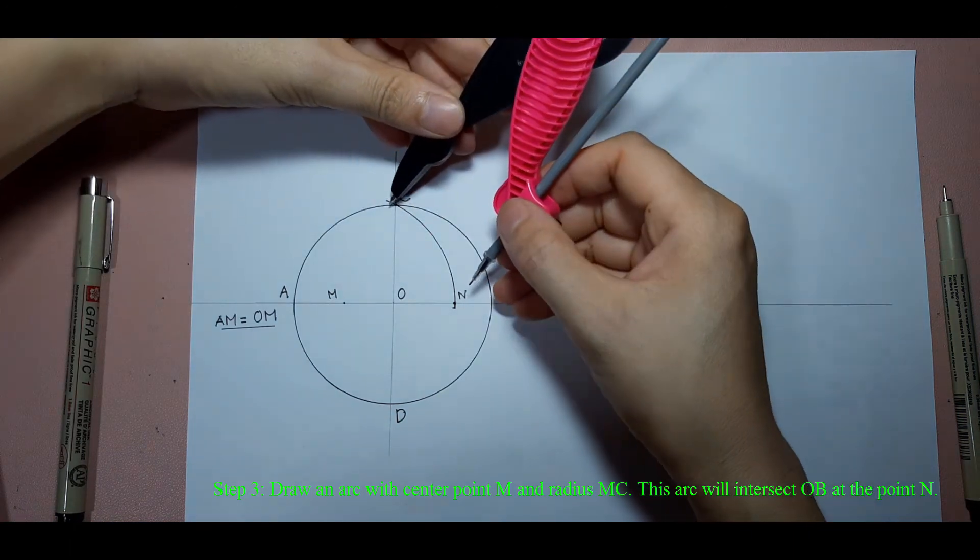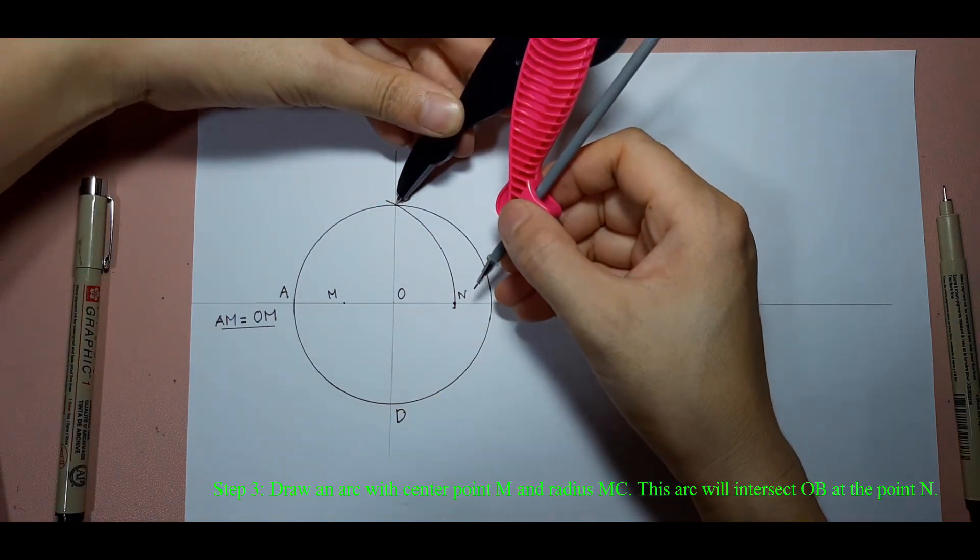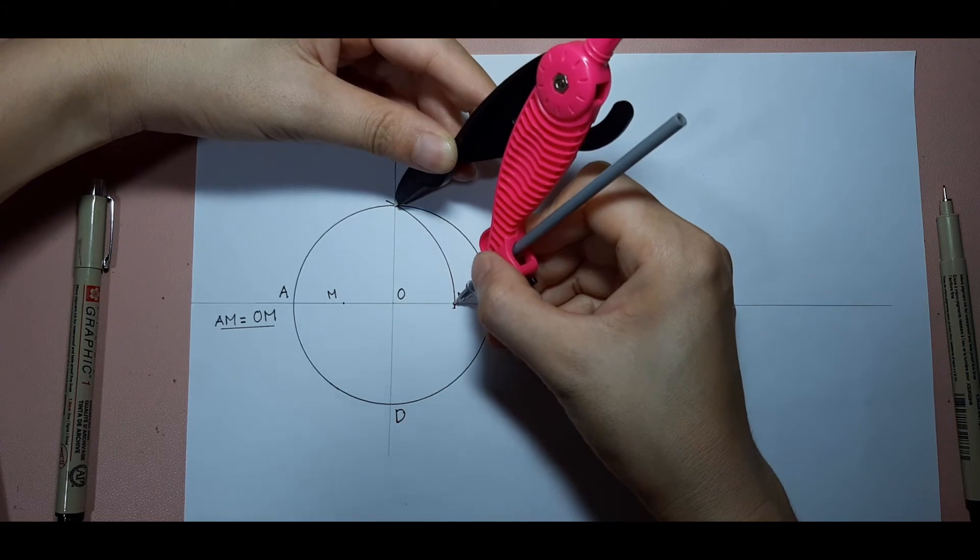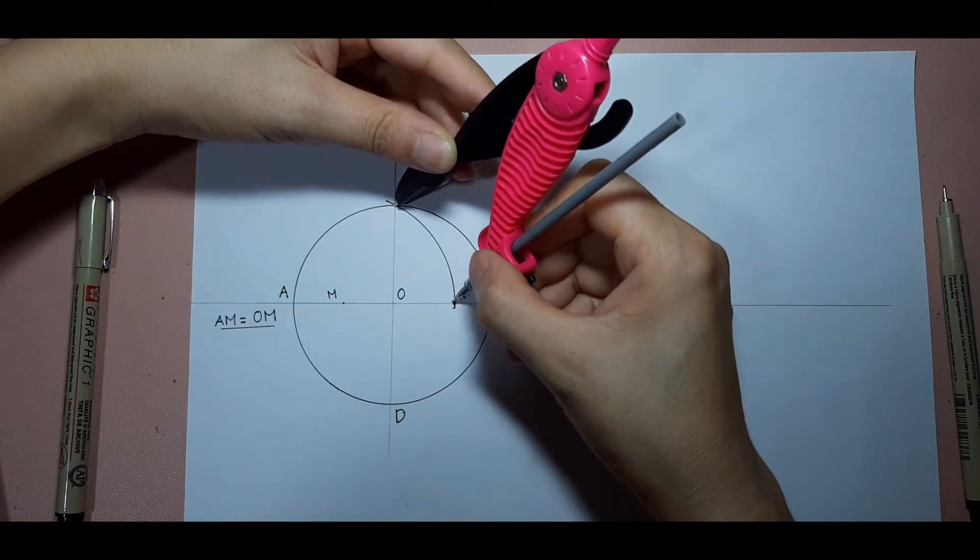We have CN and that is the side length of the pentagon. Using compass to take the length of CN and then moving it continuously in the circle to divide it into 5 equal parts.